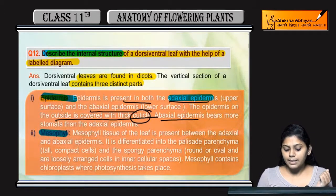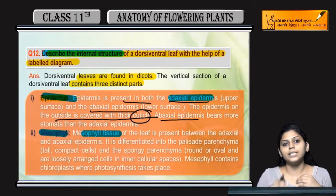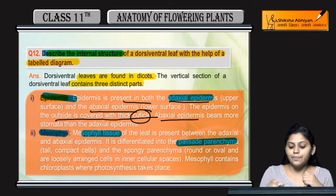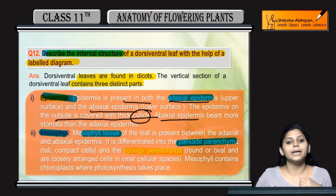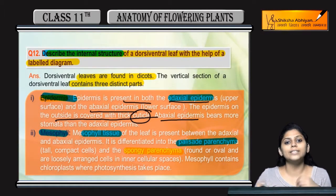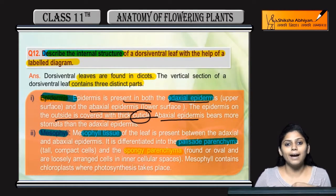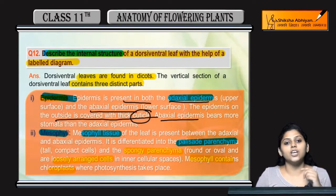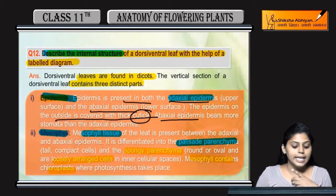Mesophyll tissue is present between the adaxial and abaxial epidermis layers. Mesophyll cells also contain chloroplasts, where photosynthesis takes place in the leaves.